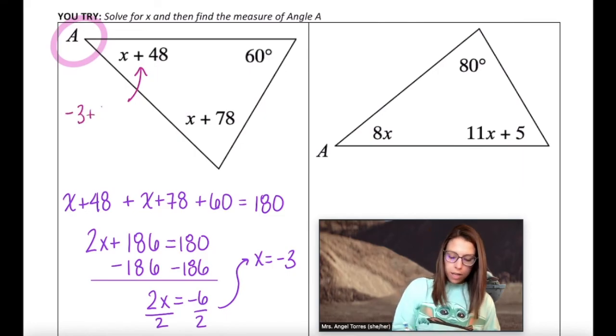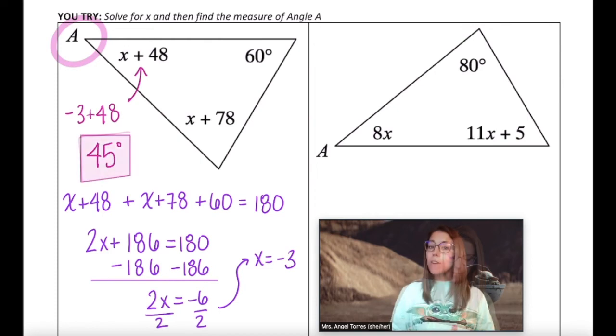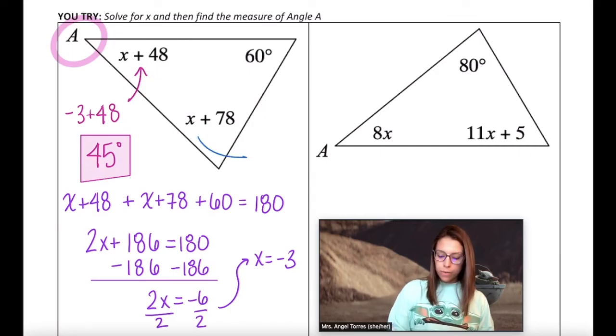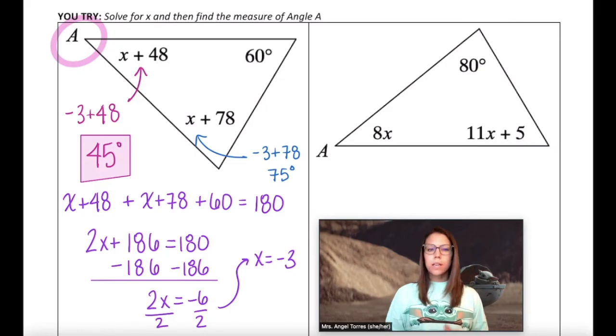If I wanted to check this, I could also plug in negative 3 into my other missing angle. Negative 3 plus 78 is 75 degrees. Does 45 plus 75 plus 60 equal 180? Yeah, it does. So I know that this triangle was done correctly.